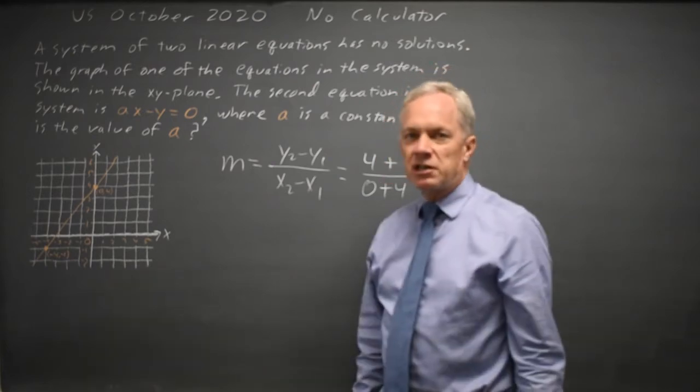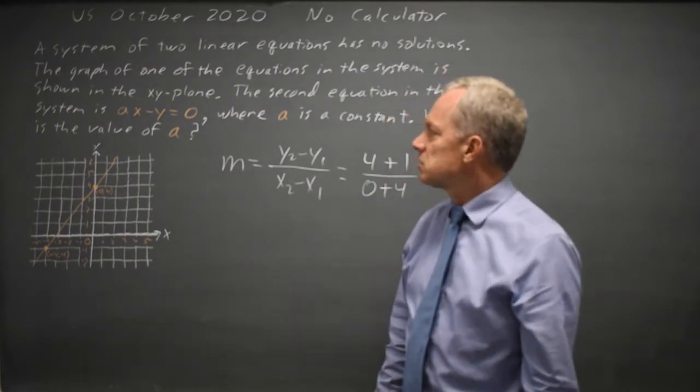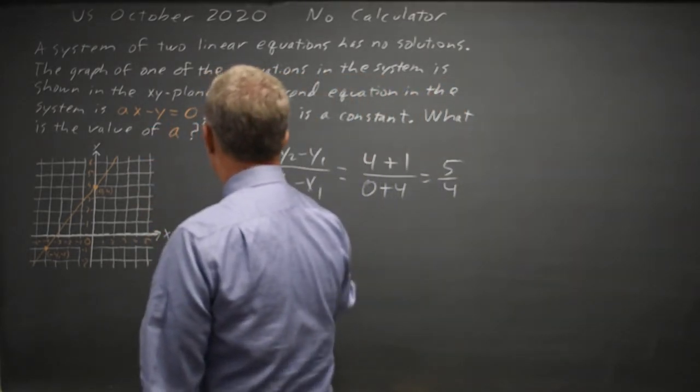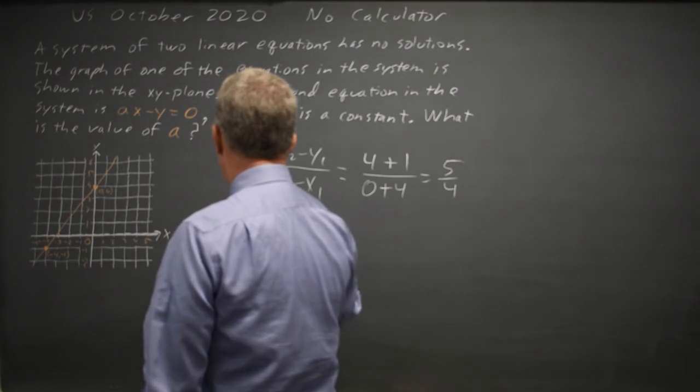The slope of the line shown is 5 fourths, so the slope of this line is also 5 fourths and I have AX minus Y equals 0. If I add Y to both sides,